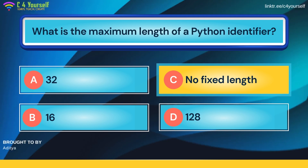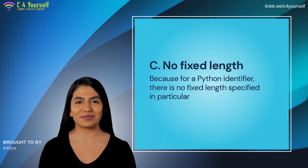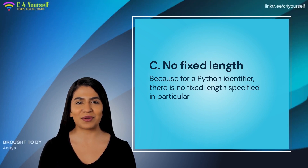The timer is over. The correct answer is no fixed length. Did you answer this correctly? The right answer is the third option, that is option C. Here is the explanation of why this option is correct. In Python, there is no fixed length in particular.